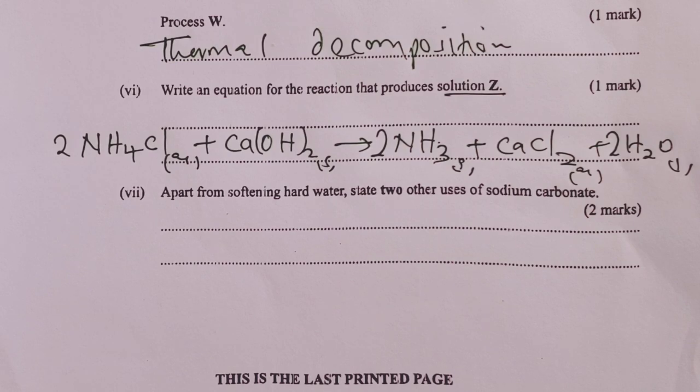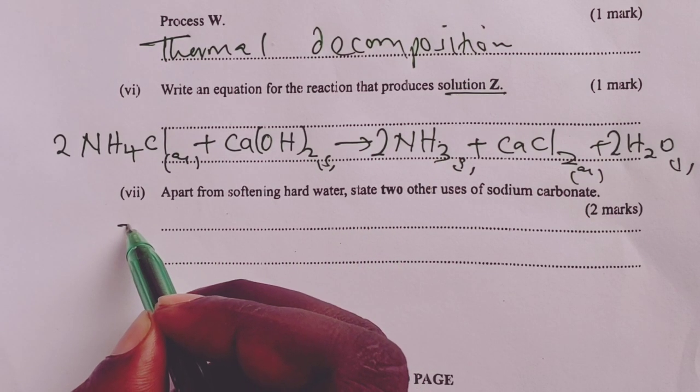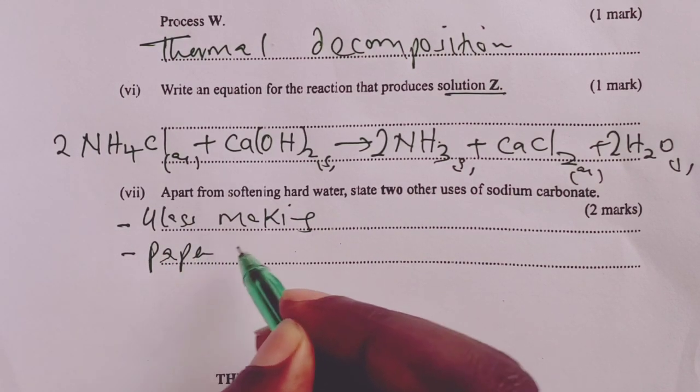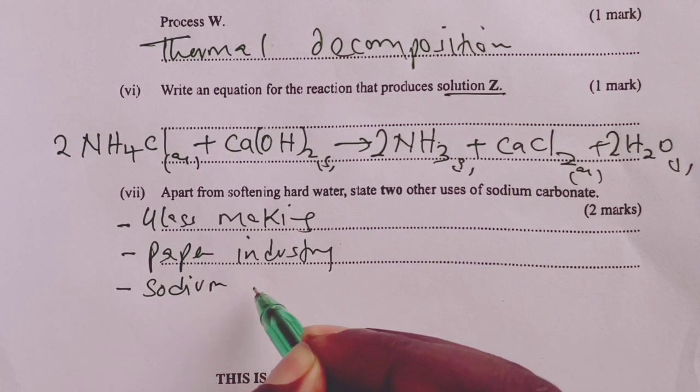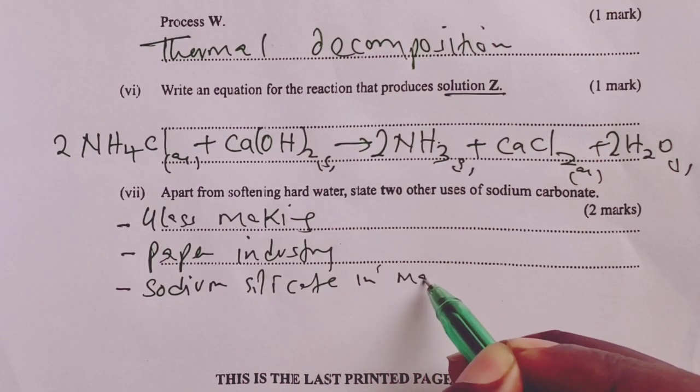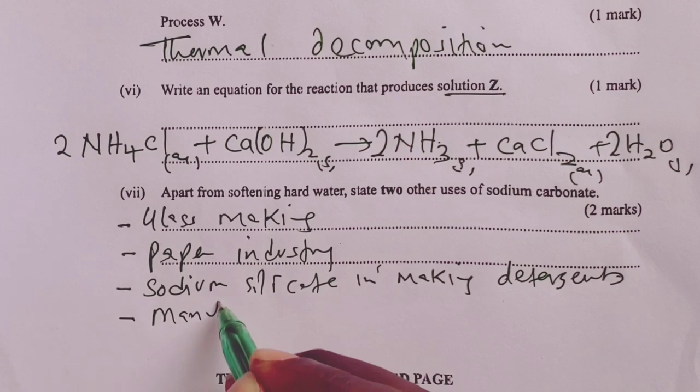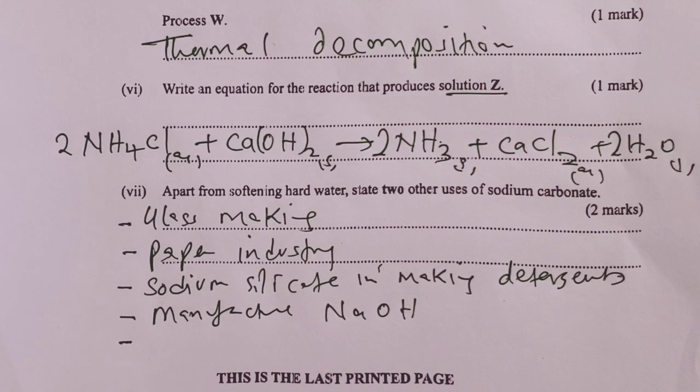Finally, for question six of the year 2018 chemistry paper one, asked us that apart from softening hard water, could we state two other uses of sodium carbonate? And there are many: glass making, one of them; we have in paper industry; we also have in making sodium silicate. This sodium silicate is then used in making detergents. Sodium carbonate is also used to manufacture sodium hydroxide. And we also have making toothpaste. So we were asked only two, any of these would be acceptable.